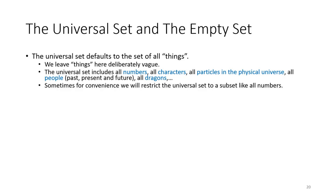That's a very special category — the set that has everything in it. In set theory, we call it the universal set: the set of all things. It includes all numbers, all characters, all particles in the physical universe, all people past, present, and future, all dragons — Puff the Magic Dragon, Drogon, your favorite — and so on, all possible things, even things that haven't been thought up yet. Something you just make up — grab two things, merge them in your brain — that new thing is in the set of all things too.